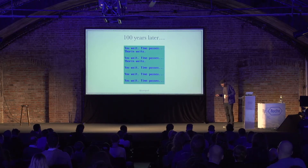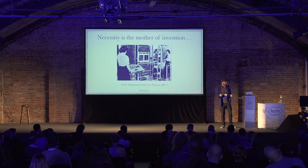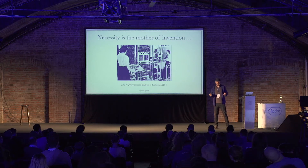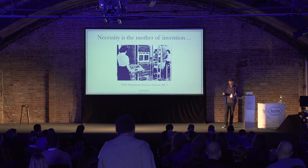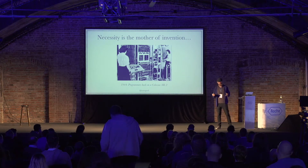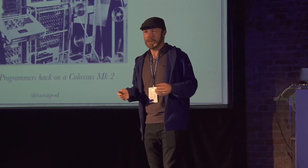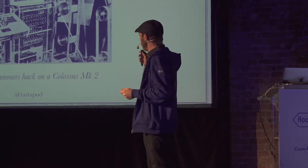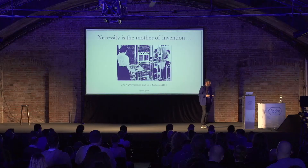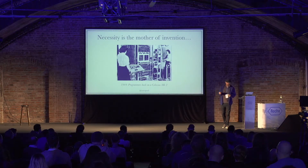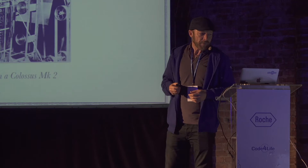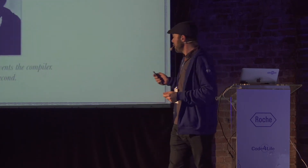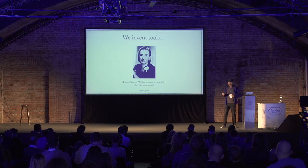A hundred years later, things have gotten a bit serious. It's 1944, the Second World War. This is programmers hacking on a computer — literally hacking — because what they're doing is cracking the Lorentz cipher, the computational bit inside the Enigma machine. We've got these two women programming a computer by moving things around in the computer. According to Wikipedia, their names are Dorothy Duboison and Elsie Booker, busy working on a Colossus Mark II, invented by the military to crack these ciphers.